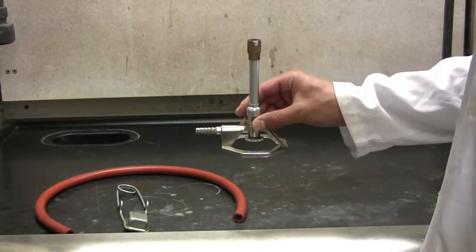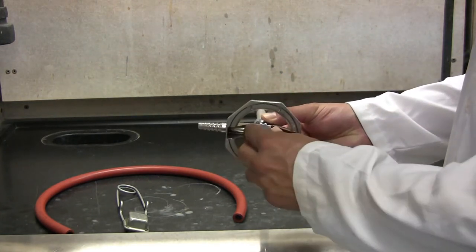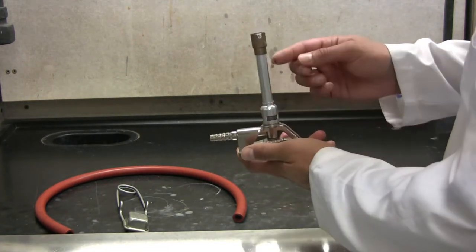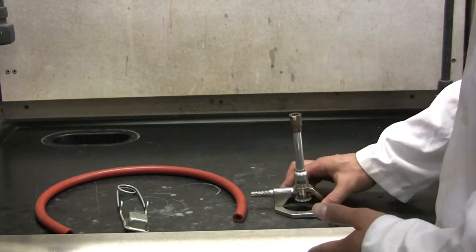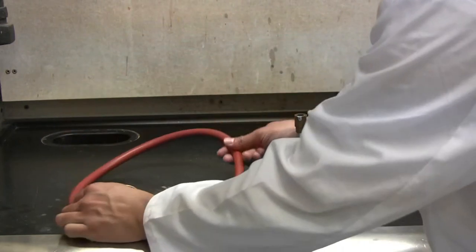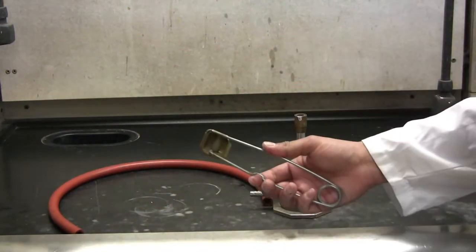You will need a Bunsen burner. On the bottom is the needle valve which controls the gas, and the top, called the barrel, controls the air flow and intensity. You also need a rubber hose and a striker to light the Bunsen burner.